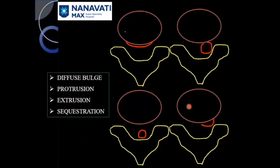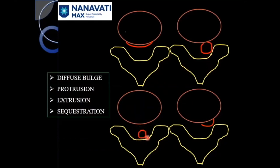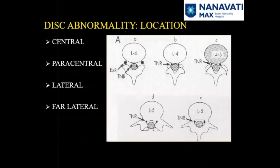To summarize: degeneration causing diffuse posterior bulge covers nearly 25% of disc circumference. Broad base and narrow apex is protrusion. Narrow base and broad apex is extrusion. And separation from the parent disc is sequestration.